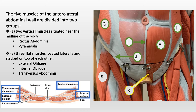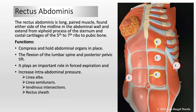The five muscles of the anterior lateral abdominal wall are divided into two groups. The first group has two vertical muscles situated near the midline of the body: rectus abdominis and pyramidalis. Rectus meaning straight, so these muscle fibers run vertically, labeled with F for easy finding, and pyramidalis, a small triangular muscle, labeled with K in this picture. Three flat muscles are located laterally and stacked on top of each other: the most outside layer called external oblique, labeled with G; internal oblique, labeled with H; and transversus abdominis, the deepest layer, shown in a separate small picture labeled with the blue rectangle.